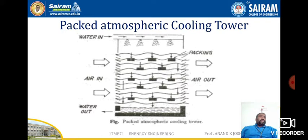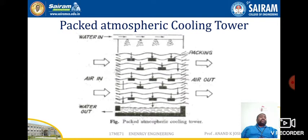The packed atmospheric type cooling tower differs from the spray fill tower in that a fill material is used to break the water into small droplets. Air flow is crosswise to the water flow. These towers are also rarely used, even for small thermal power plants, due to the high original cost, high pumping height required, and the need for extreme length, height, and narrow width to withstand high winds.